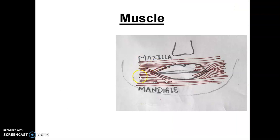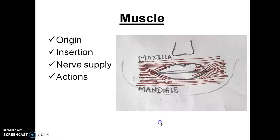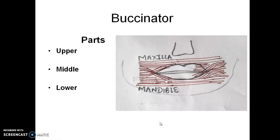This muscle buccinator is in the cheek. You can see that here it is in the cheek. This muscle will be discussed under origin, insertion, nerve supply and its action. Let's start with the parts of the buccinator. Buccinator has got three parts: the upper part, middle part and the lower part.